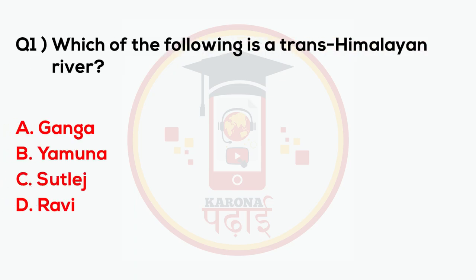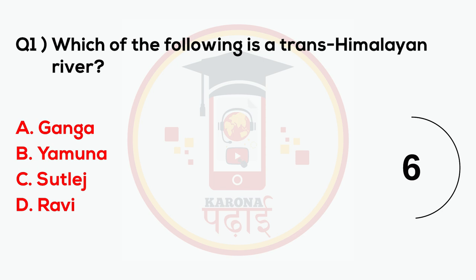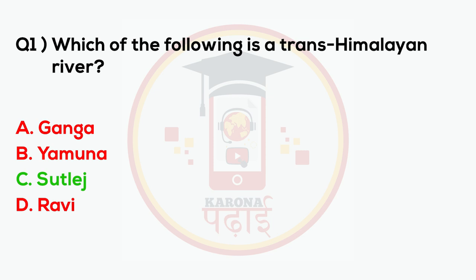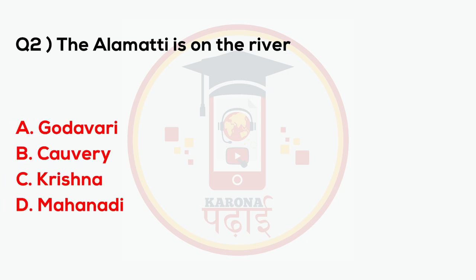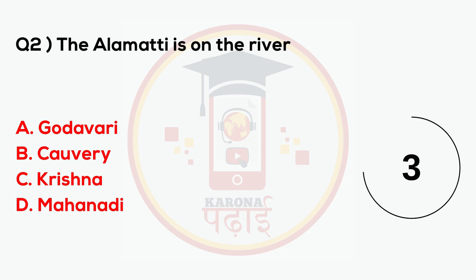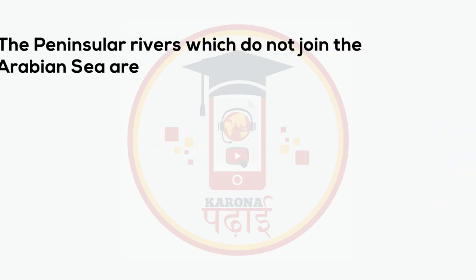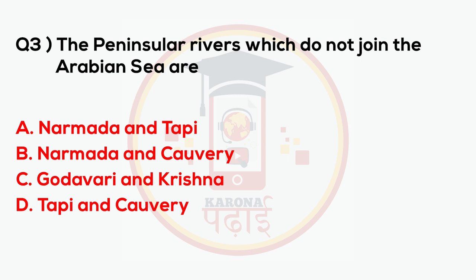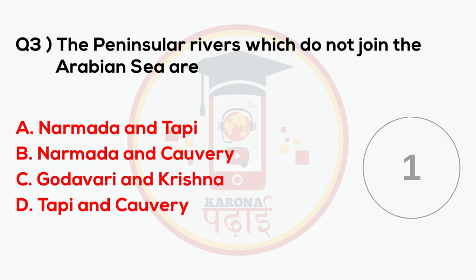Which of the following is a Trans-Himalayan River? Sutlej. The Alamatti dam is on the river Krishna. The peninsular rivers which do not join the Arabian Sea are Godavari and Krishna.